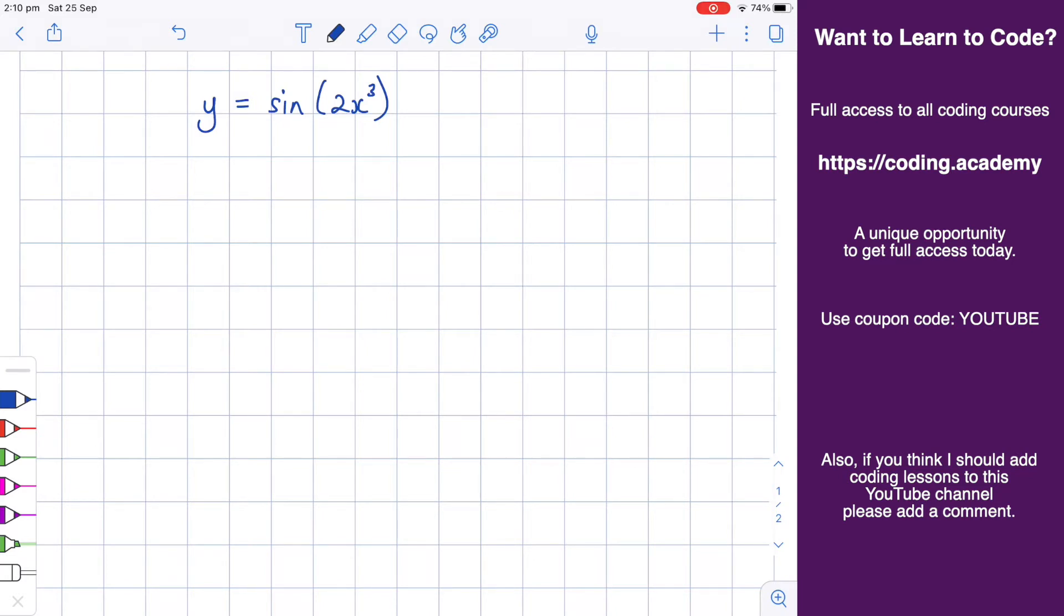The first thing we're going to do here is we're going to substitute in u for 2x cubed. So let u equal 2x cubed. I'm going to differentiate that. So du by dx is equal to 6x squared. So now what we've got, we've got that y is equal to sine u. And that's easy to differentiate. dy by du is simply cosine u.